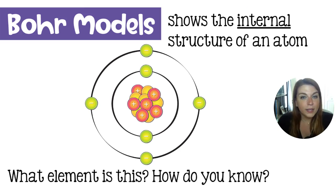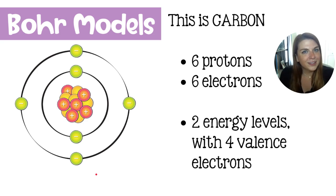The idea of drawing a Bohr model is that it's going to show us the internal structure of the atom. Now looking at this atom, can you figure out what element this is? This element is most certainly carbon and you would know that because it has six protons in its nucleus. It also has six electrons.